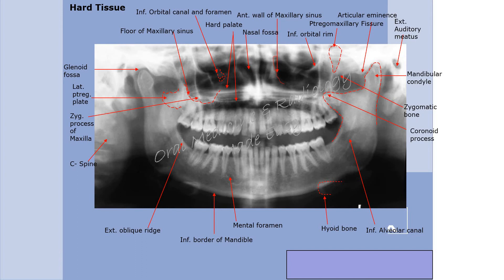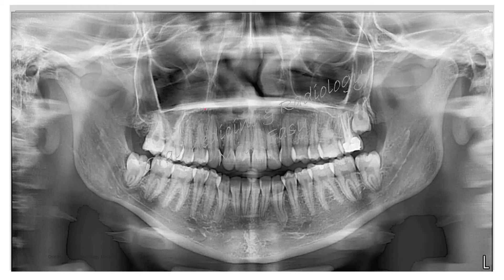These are the various hard tissue landmarks evident on a panoramic radiograph. There are many landmarks present and it can be confusing to see them all together, so let us start interpreting them one by one.